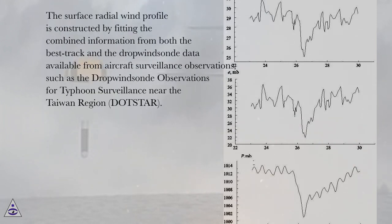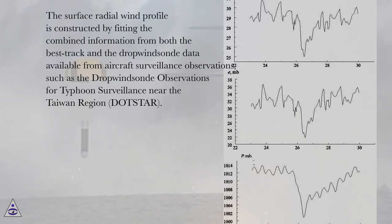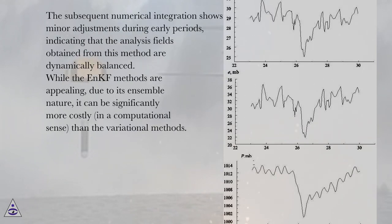The surface radial wind profile is constructed by fitting the combined information from both the best track and the dropwindsonde data available from aircraft surveillance observations, such as the dropwindsonde observations for typhoon surveillance near the Taiwan region. The subsequent numerical integration shows minor adjustments during early periods, indicating that the analysis fields obtained from this method are dynamically balanced.